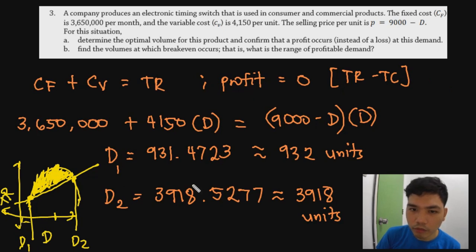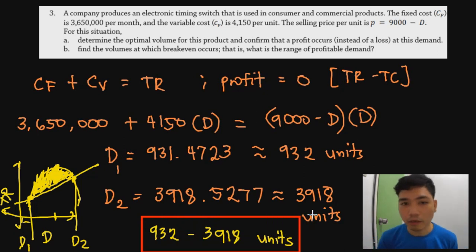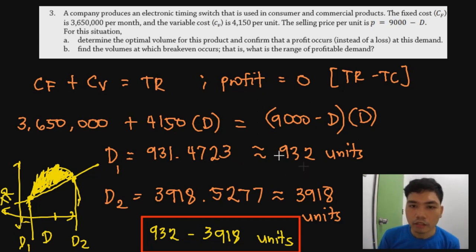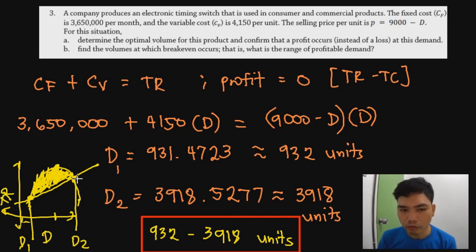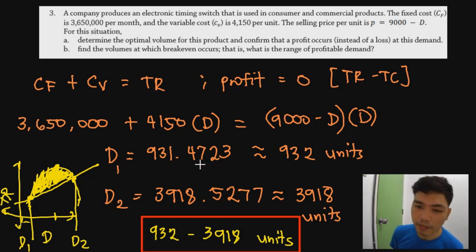The range of profitable demand is 932 to 3,918 units. For optimal volume, differentiate the profit equation and set equal to zero. For break-even range, set profit equal to zero and solve the quadratic for D, then round up the lower bound and round down the upper bound to ensure you remain in the profitable region.